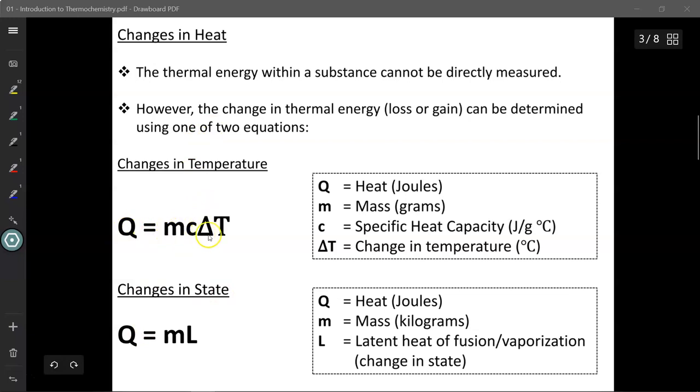The first is Q equals MC delta T, where Q is the energy released or absorbed measured in joules, M is the mass of the substance measured in grams, C is its specific heat capacity measured in joules per gram degree Celsius, and delta T is the change in temperature, either measured in Celsius or kelvins.